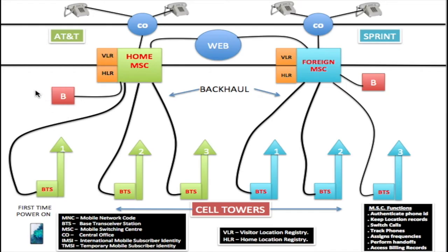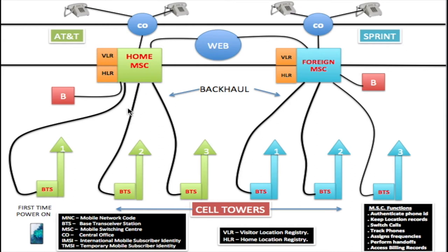The B stands for business office, so all your records — such as whether you've paid your bill — are kept there. Whenever you make a call, this information is checked to make sure your bill is up to date before the call is put through. Backhaul is the line connected from the MSC back to the base station. This is usually a fiber optic line that is buried. In some cases, it could be a microwave link in situations where you cannot run cables underground, and they may use a radio frequency instead.